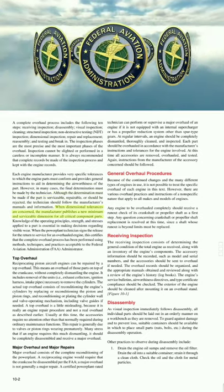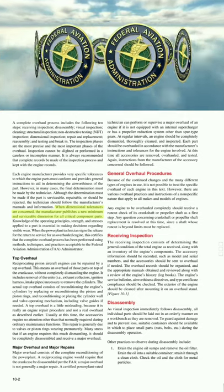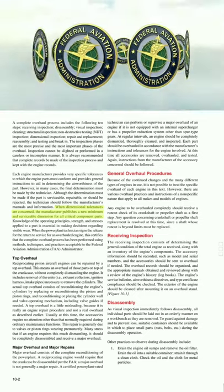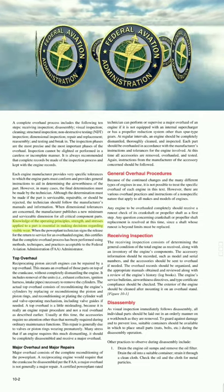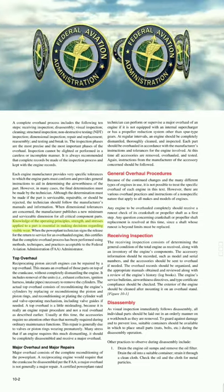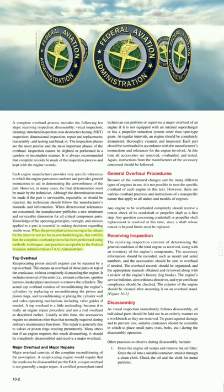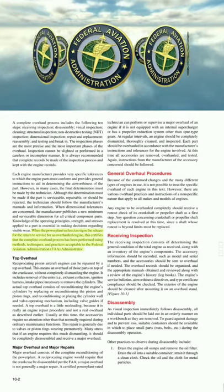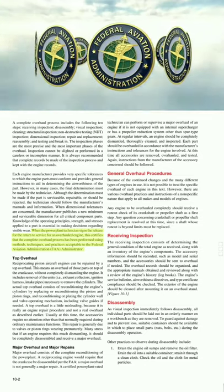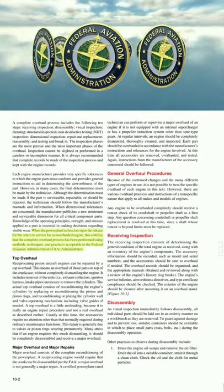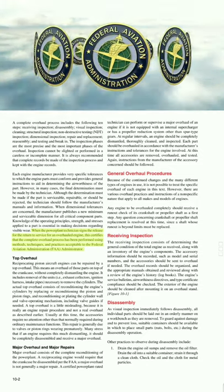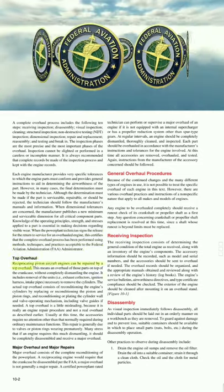Each engine manufacturer provides very specific tolerances to which the engine parts must conform, and provides general instructions to aid in determining the airworthiness of the part. In many cases, the final determination must be made by the technician — whether the part is serviceable, repairable, or should be rejected. The technician should follow the manufacturer's manuals when dimensional tolerances are concerned. The manufacturer publishes new minimum and serviceable dimensions for all critical component parts. Knowledge of operating principles, strength, and stresses applied to a part is essential in making decisions regarding visible wear. When the power plant technician signs the release for return to service for an overhauled engine, this certifies that the complete overhaul process has been performed using methods, techniques, and practices acceptable to the FAA administrator.